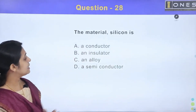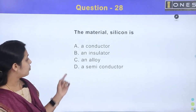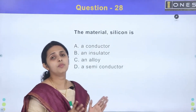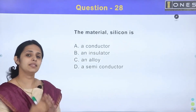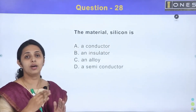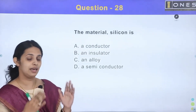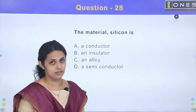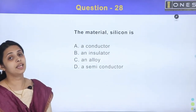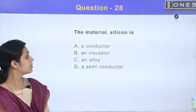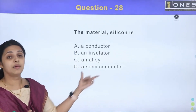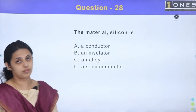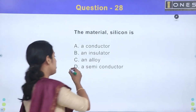Next question: the material silicon is — option A: conductor, option B: insulator, option C: alloy, option D: semiconductor. Materials are divided based on the conduction band and valence band energy gap. Silicon and germanium are semiconductors, used in transistors. So the answer is option D: semiconductor.